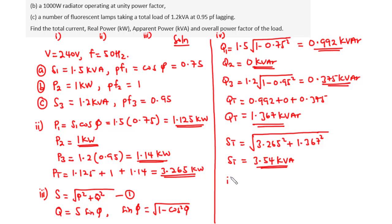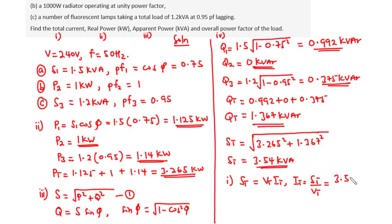Now back to part i, finding the total current. We know that apparent power equals the product of the supply voltage and the supply current. So the total current IT equals ST divided by Vt. We have ST equal to 3.54 kilovolt amperes, so dividing 3540 by 240 volts gives IT equal to 14.75 amperes. This is the total supply current.